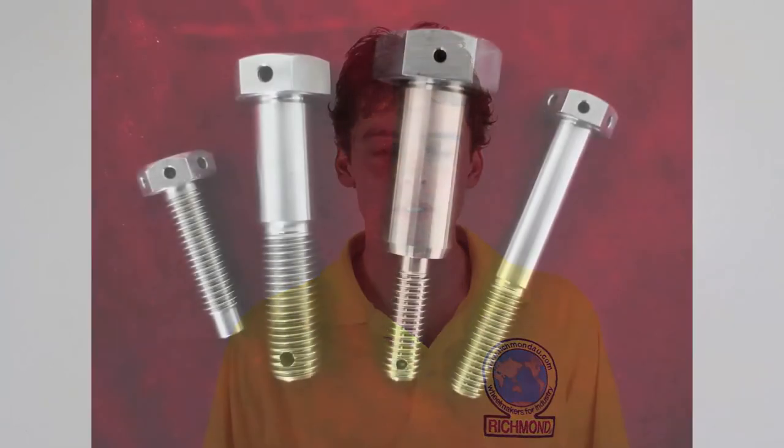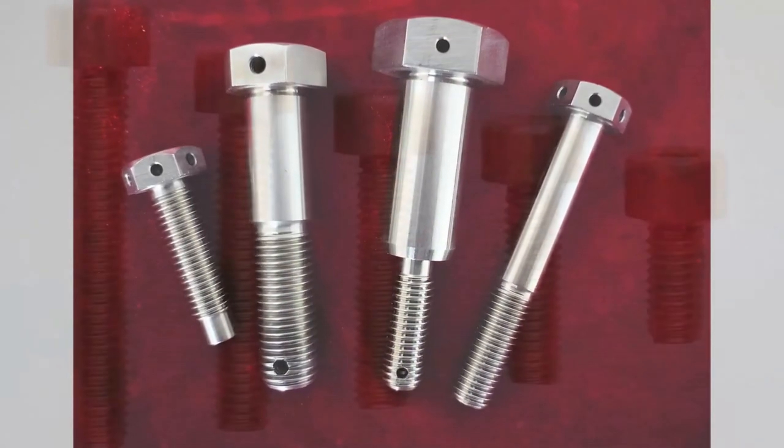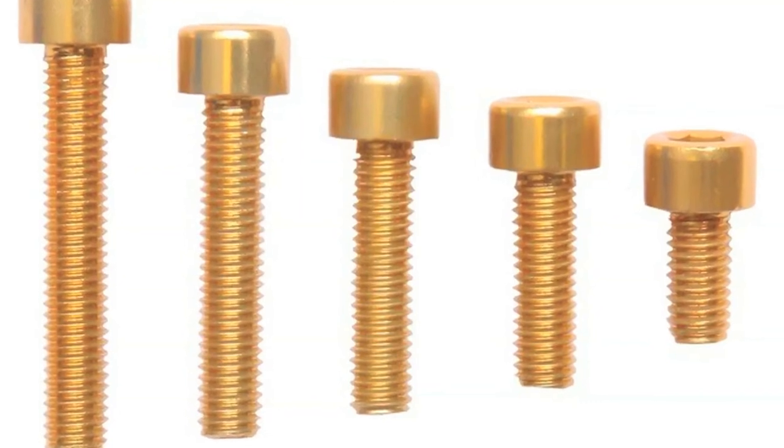Richmond manufactures our axles in-house in a variety of materials. We can manufacture axles in steel, stainless steel, aluminum, and plastic.